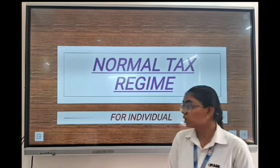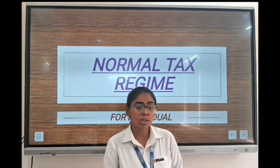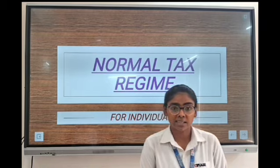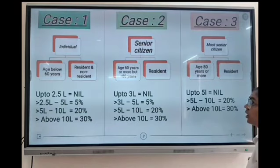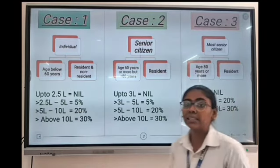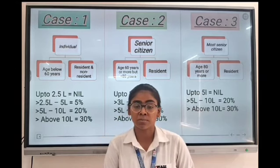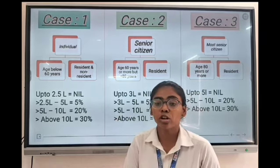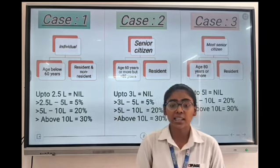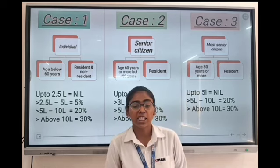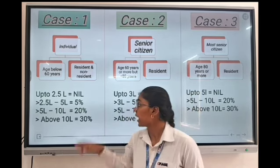Today we will know about the old tax system for individuals. Basically there are three cases in the old tax system. For Case 1, which is also called the general rule, the conditions are: individual, age below 60 years, resident or non-resident.